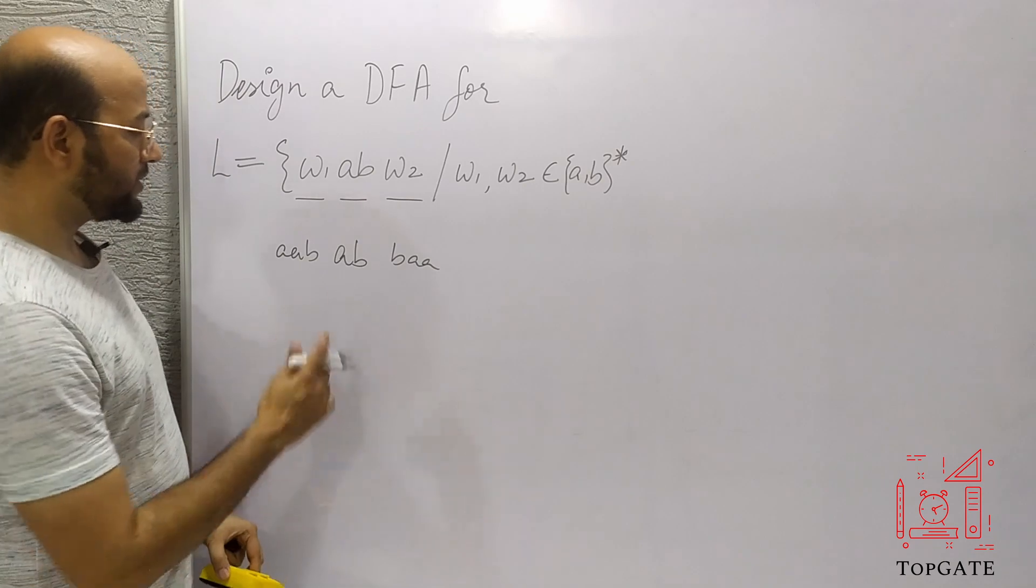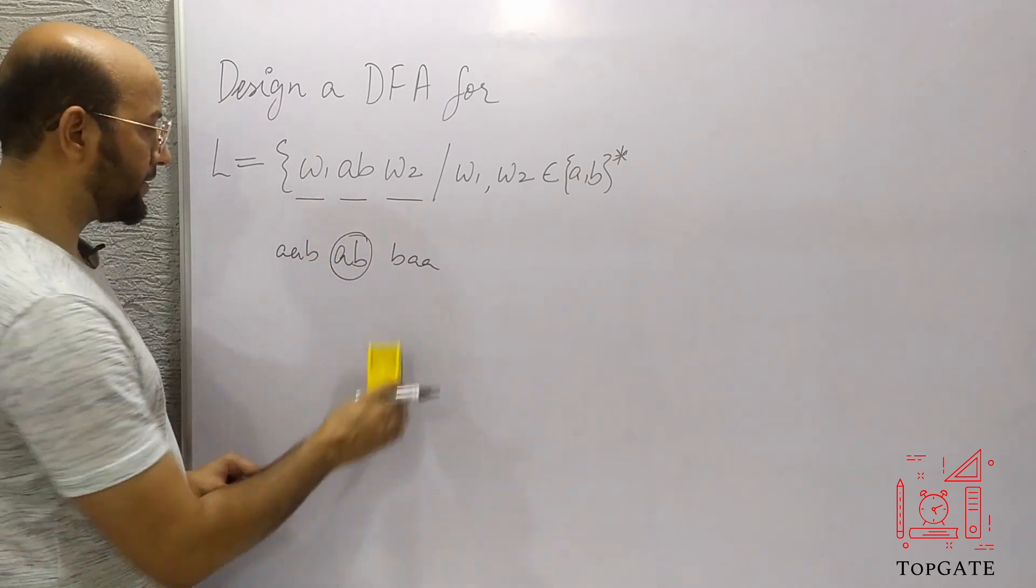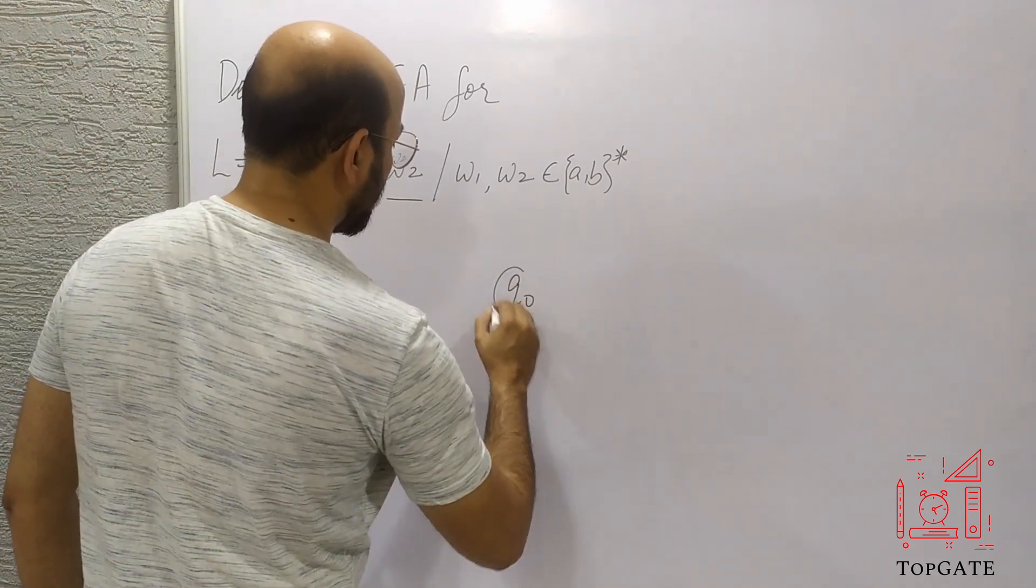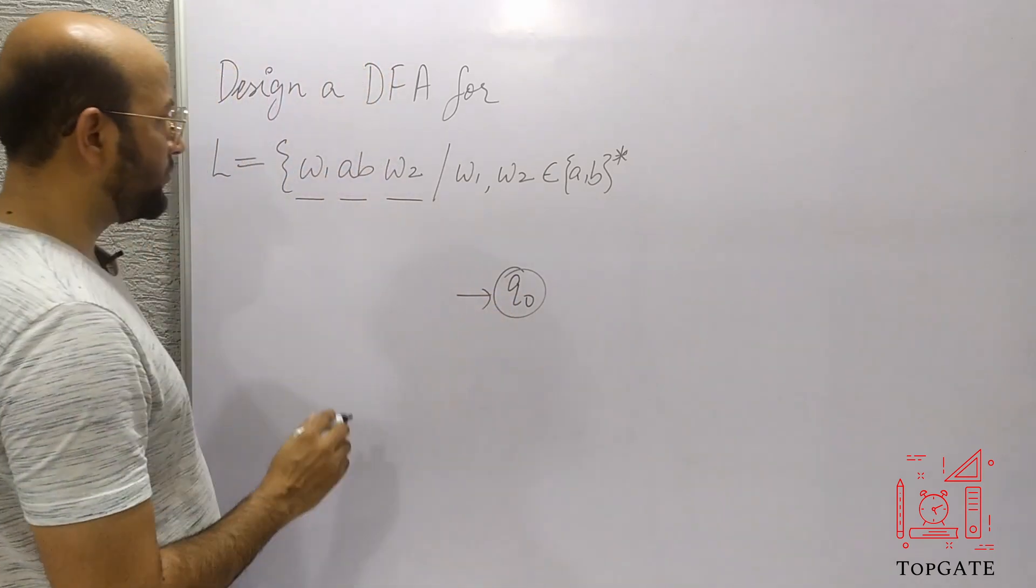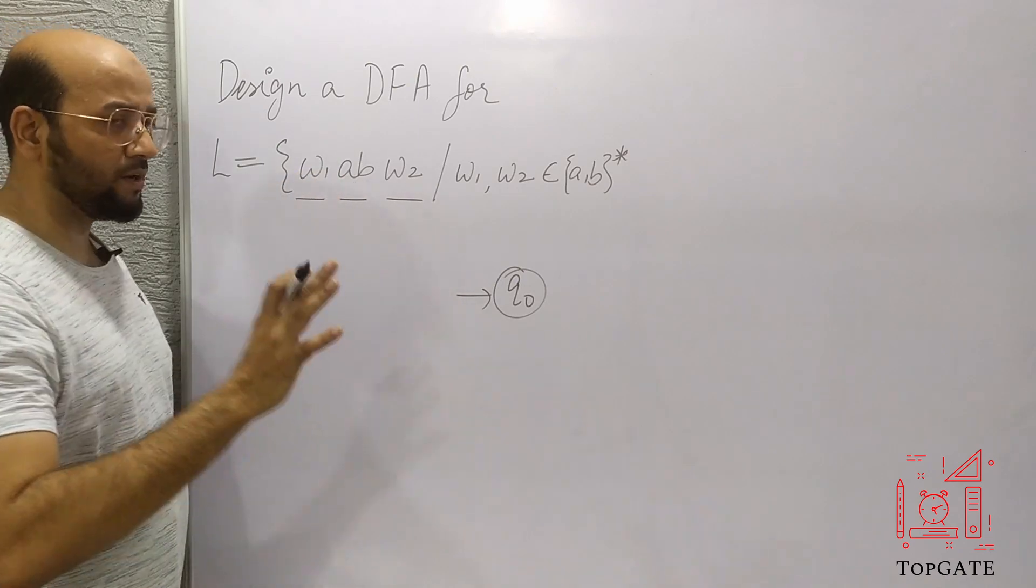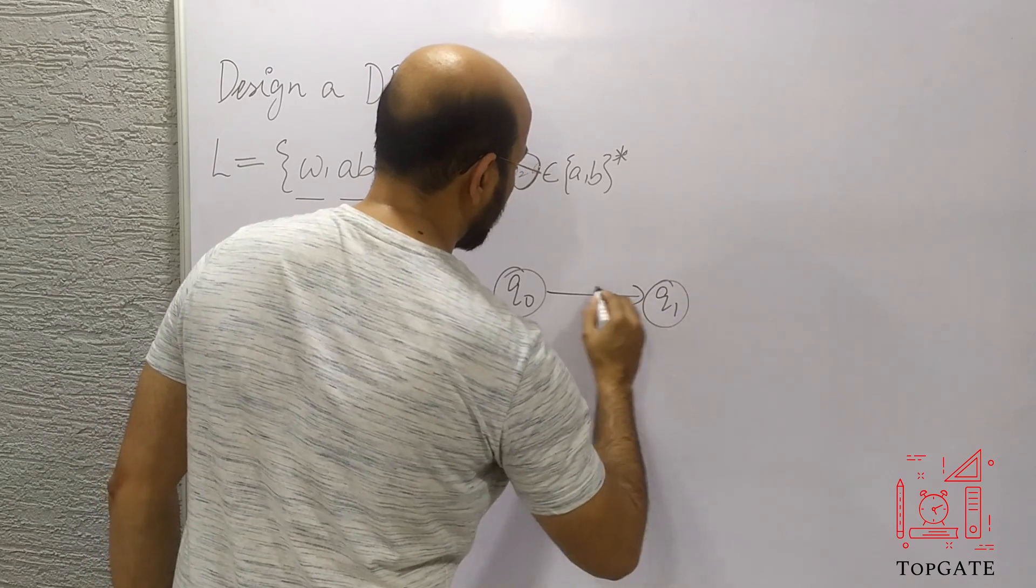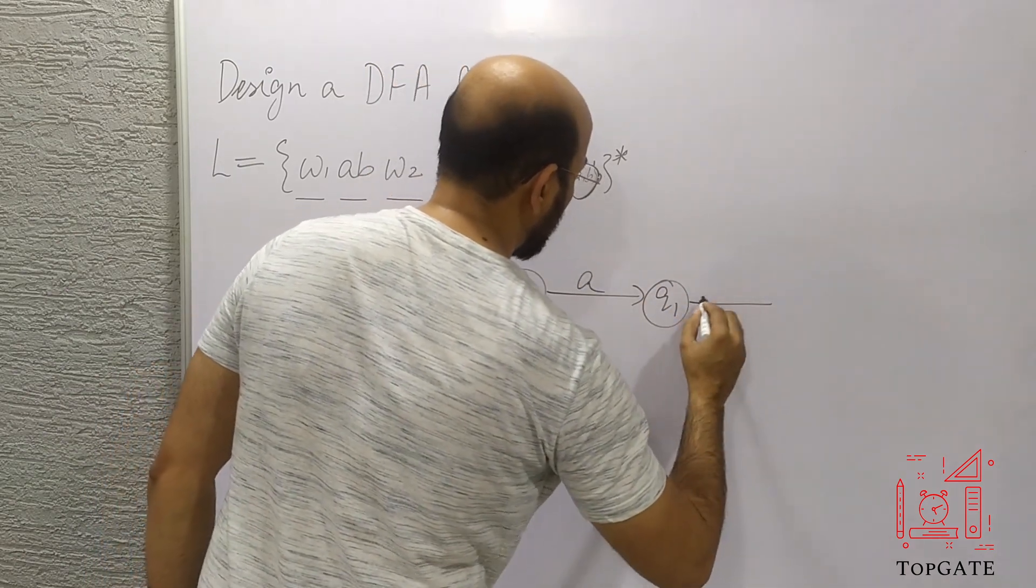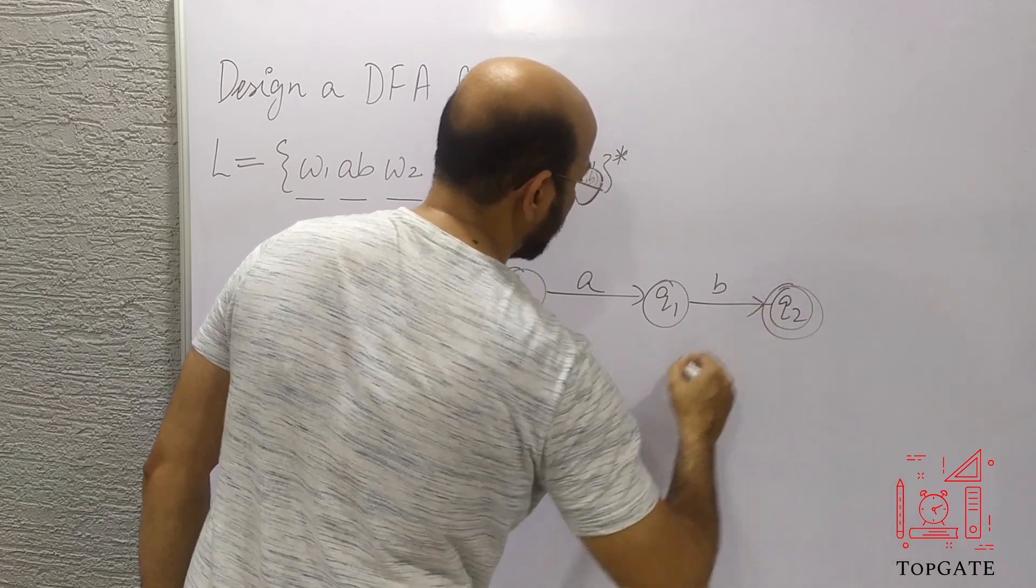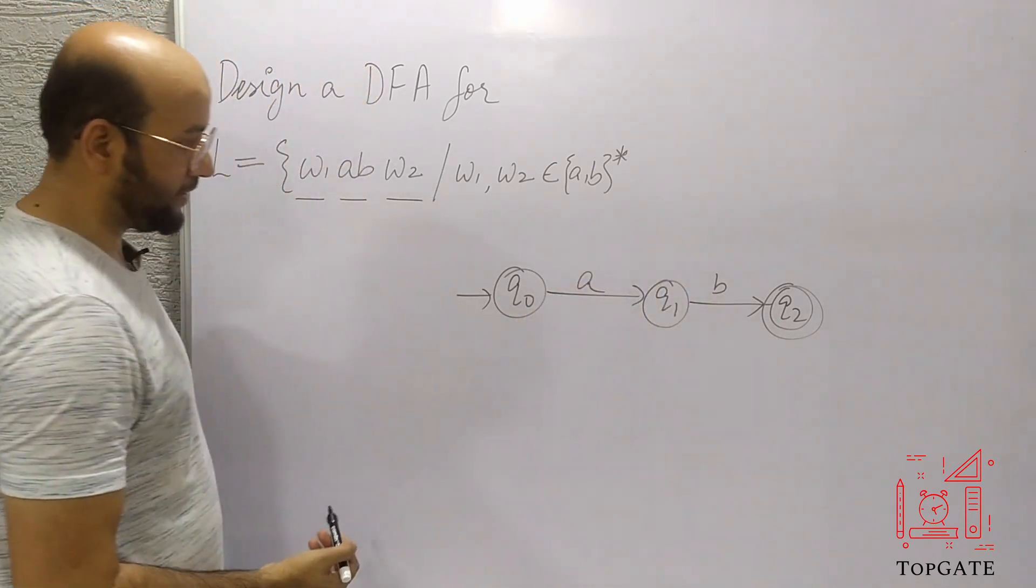So what we will do? We will start with the shortest possible string and then we will add all these options into that. Now let's start. Initial state is Q0 and we are accepting the shortest possible string. So AB is there mandatorily. So I will simply go to Q1 with A, and from Q1 to Q2 on a transition of B, and make Q2 as the final state. So in this way, we are accepting AB here.